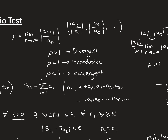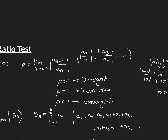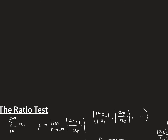Finally, the case when rho equals 1, and we want to show the test is inconclusive. We'll prove this by showing two examples — one non-convergent and one convergent. A simple example that clearly does not converge: set all terms equal to 1, so the series is 1 + 1 + 1 + ... which clearly goes to infinity. But the ratio between all terms is just 1, so the sequence of ratios is 1, 1, 1, ... which has limit 1. So rho equals 1 and the series diverges.